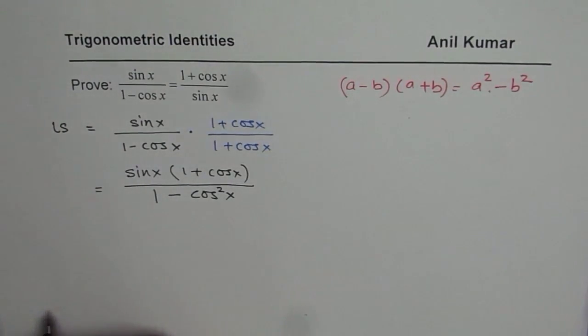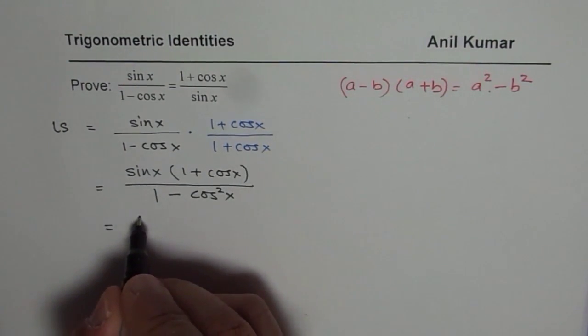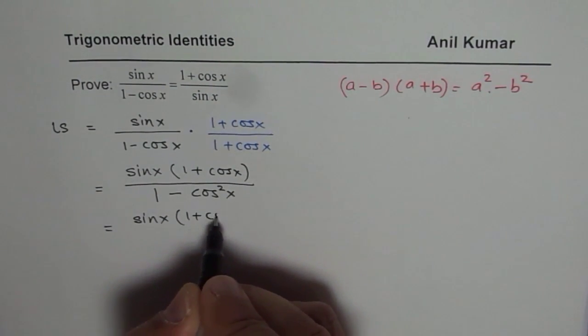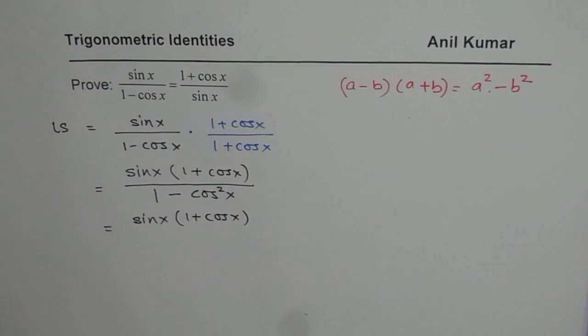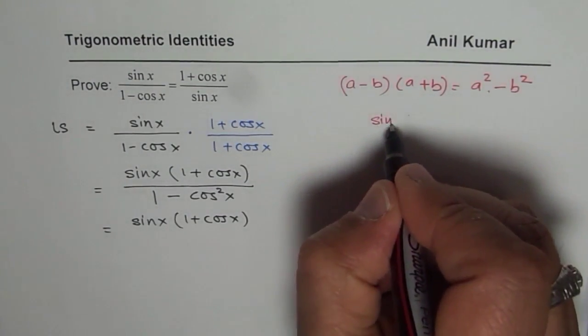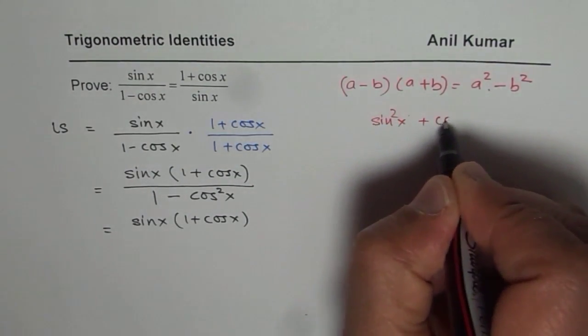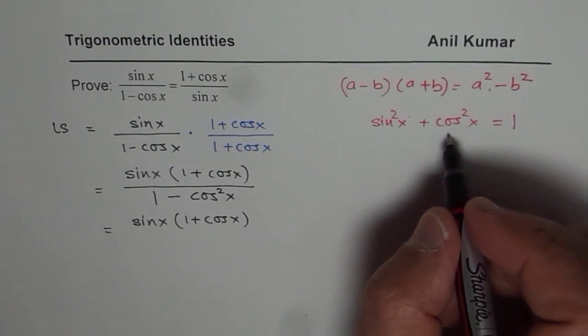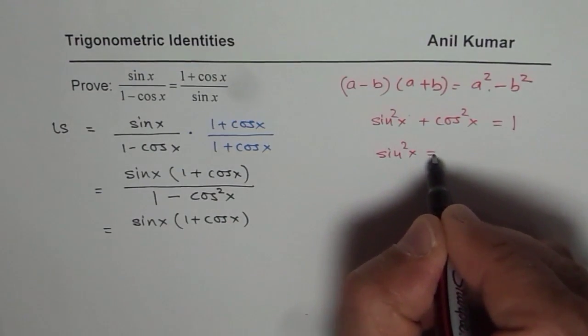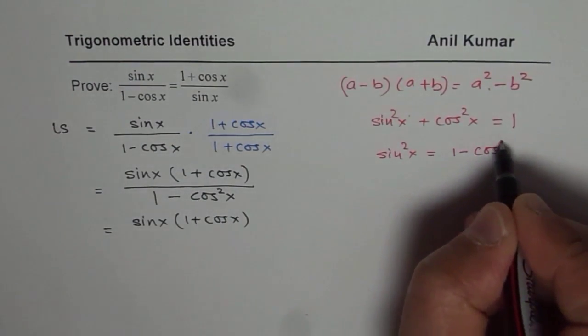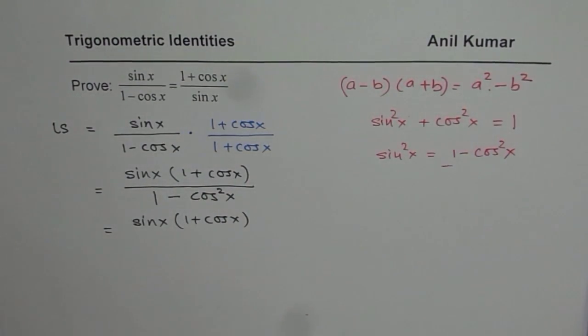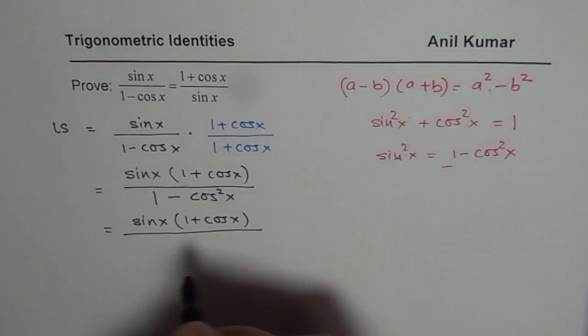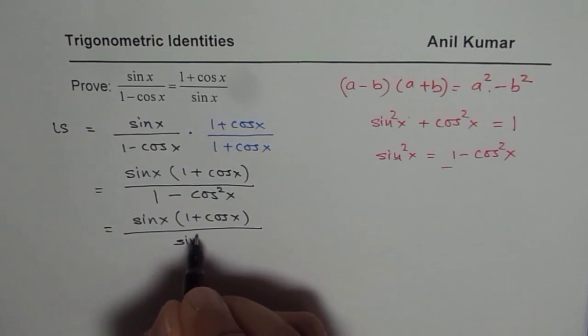So, that is what you get. Now, what is 1 minus cos square x? For that, I hope you remember that sin square x plus cos square x is equal to 1. So, sin square x is equal to 1 minus cos square x. So, that is what we are going to apply here in the denominator. So, we have 1 minus cos square x. It could be written as sin square x. Do you see that?